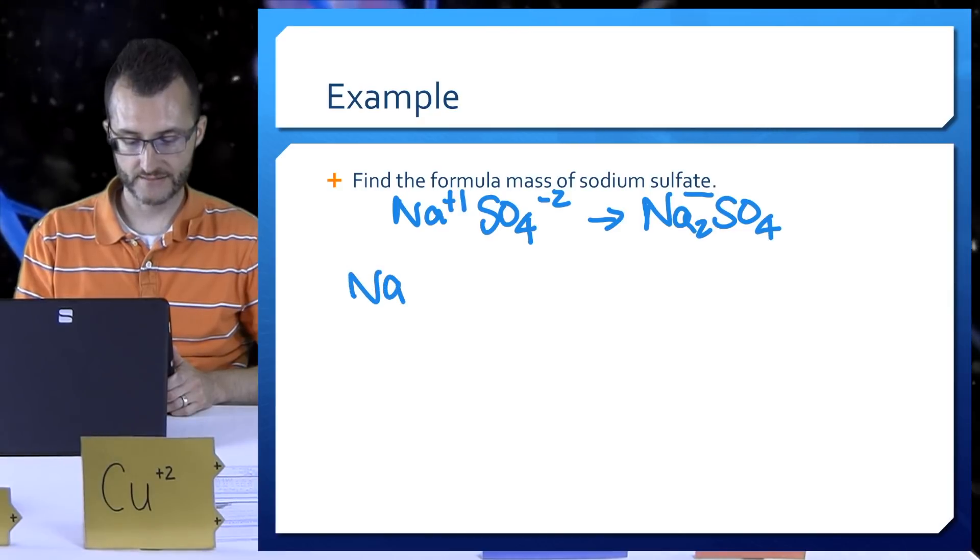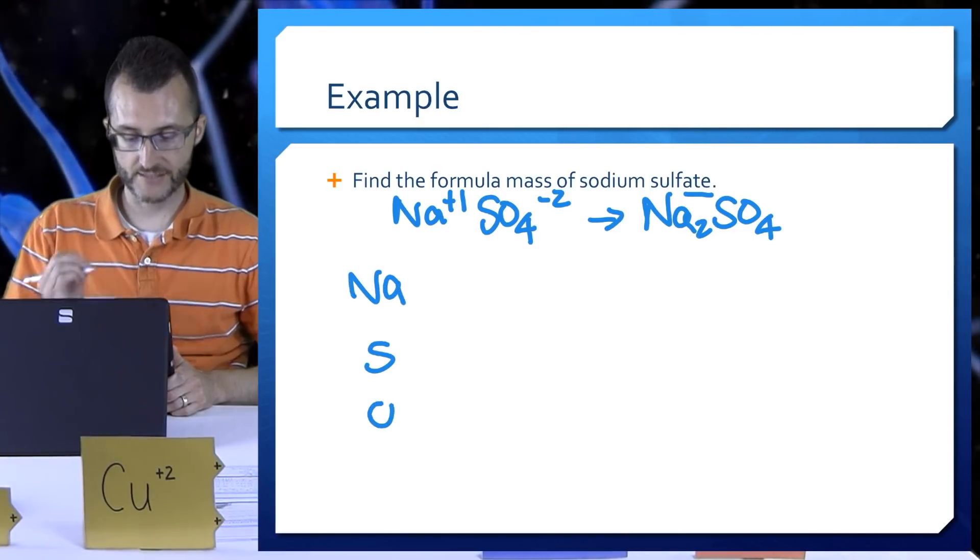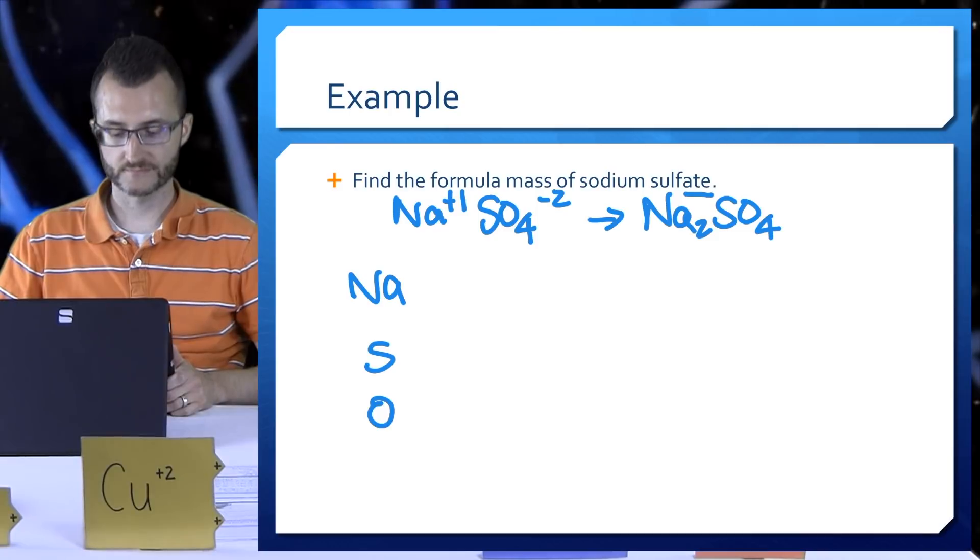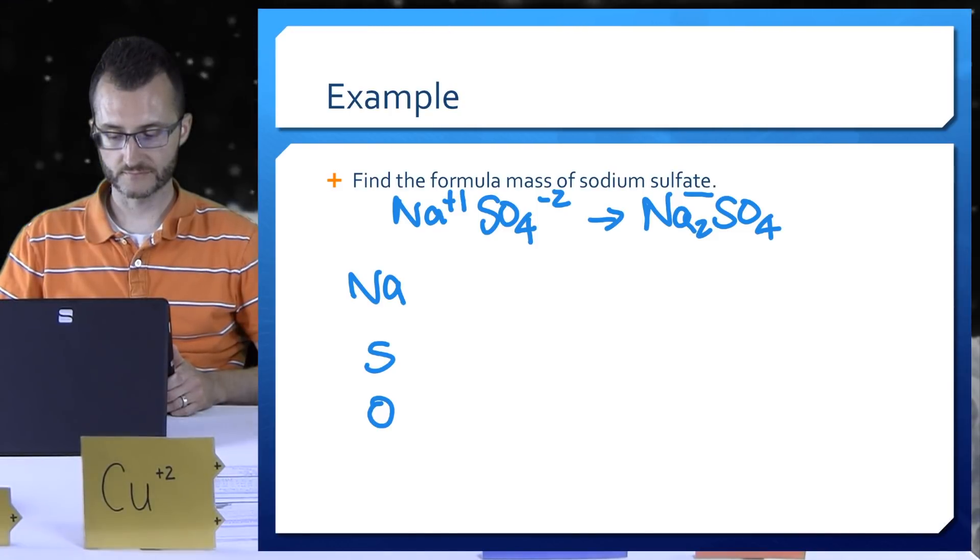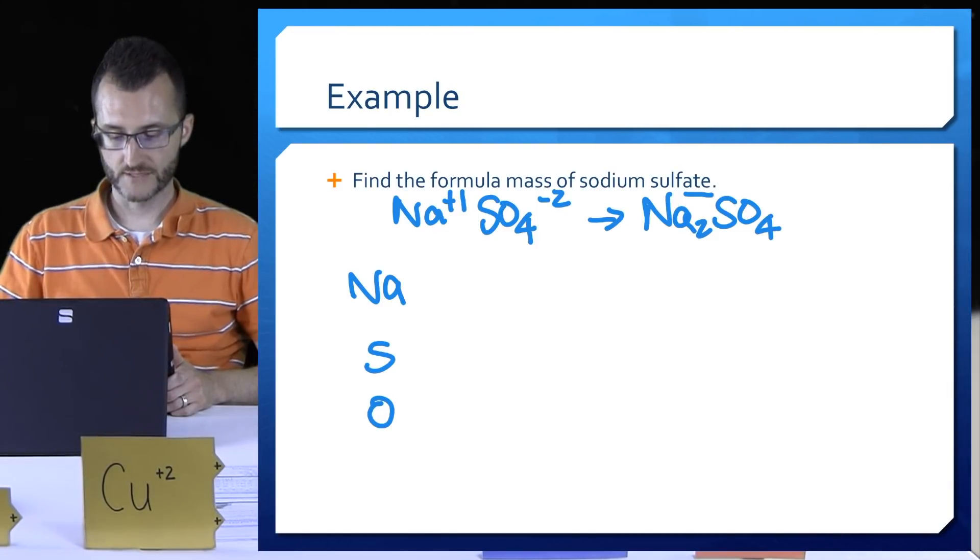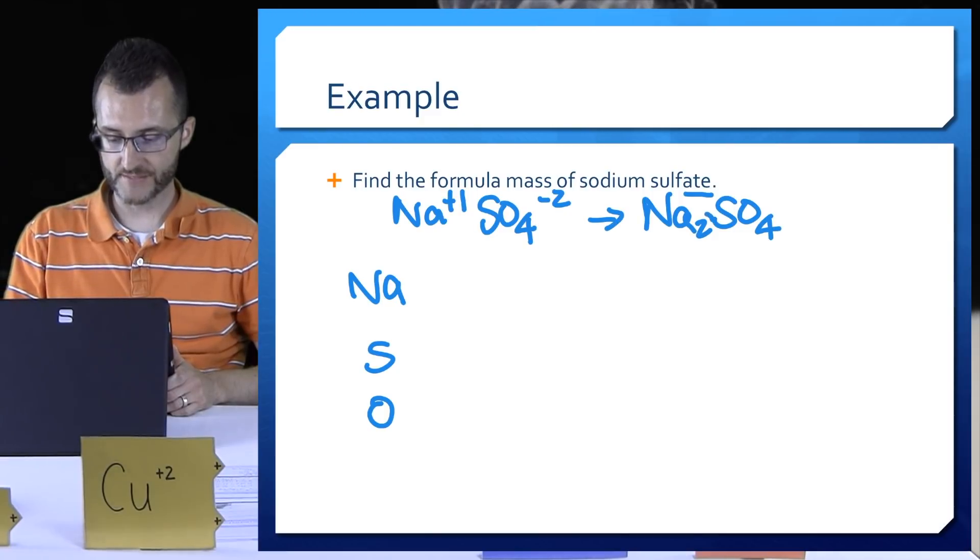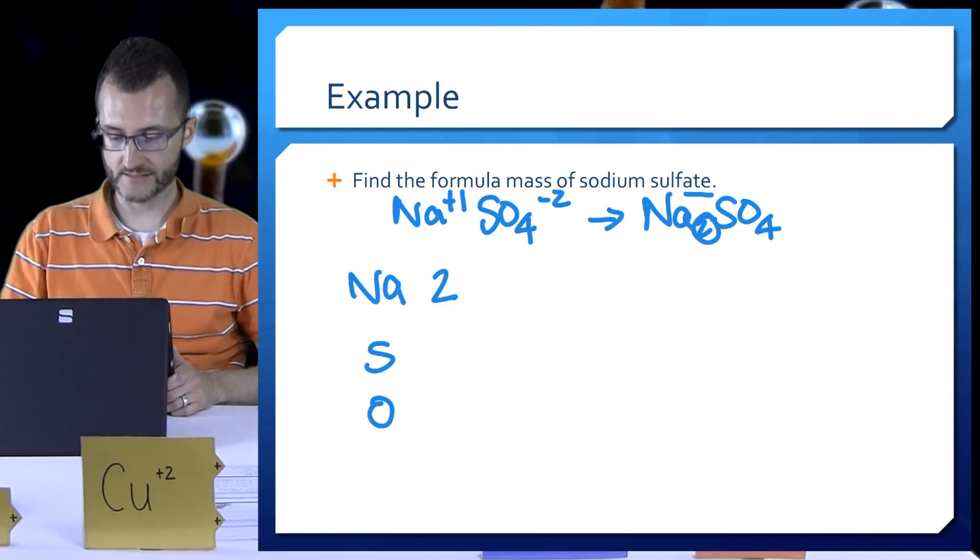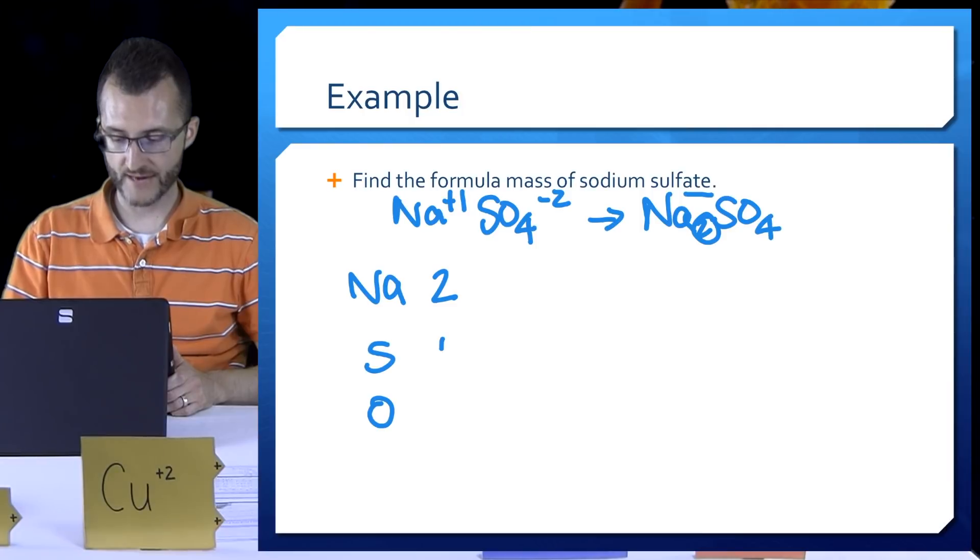So now we're going to take all of the elements that are in that compound and list them vertically in order. I've got Na, S, and O. The next column, we're going to write down how many atoms of each of those elements we have in that formula. Just looking at the subscripts I've got two Na's, just an assumed one for S, and four oxygens.